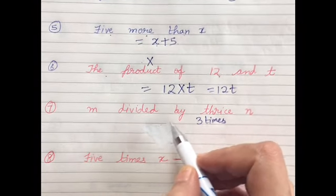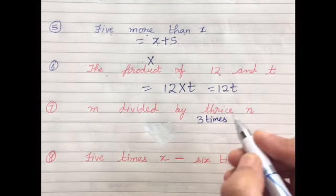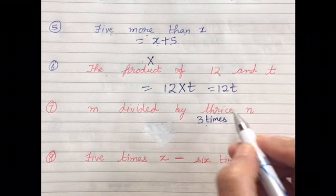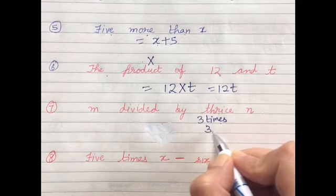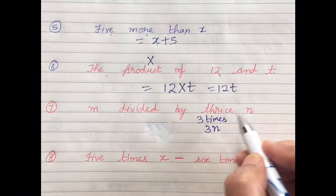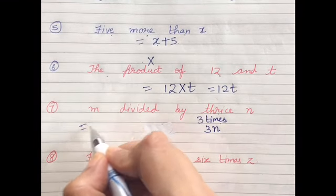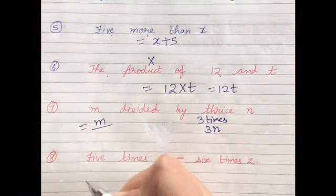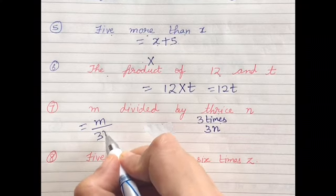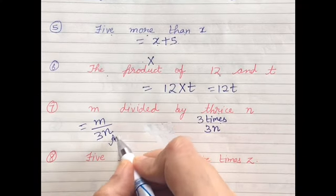Next is M divided by thrice of N. Thrice means 3 times, so thrice of N is 3N, so M divided by thrice of N, that means M divided by 3N. So this is your answer.